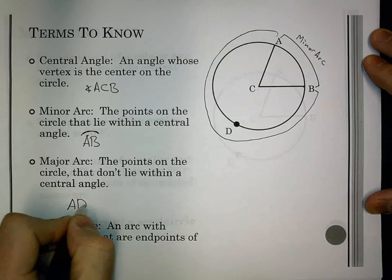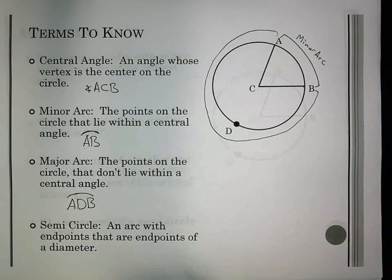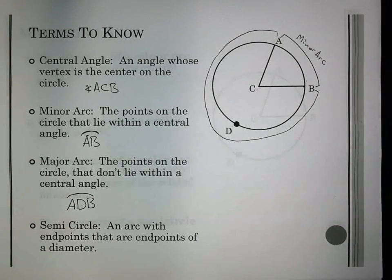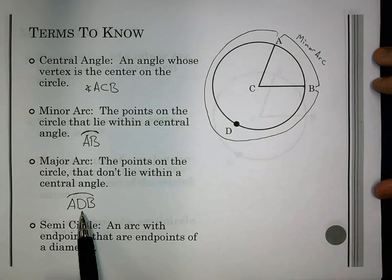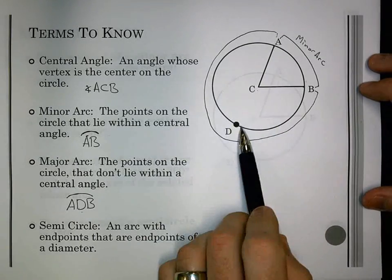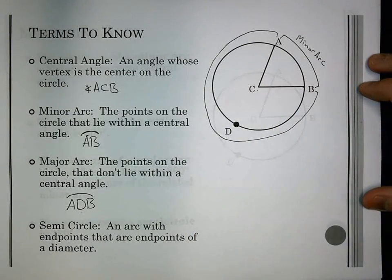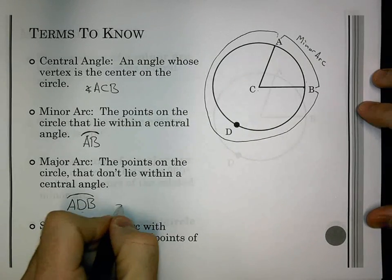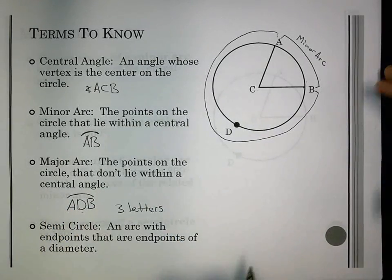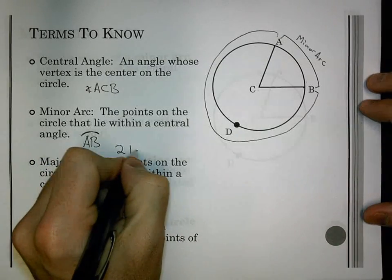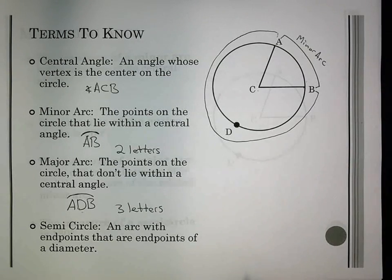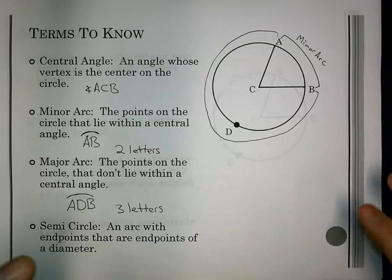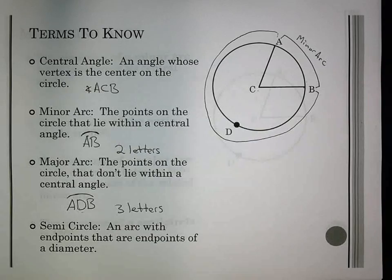So, we're going to call that ADB, and the arc above that one. We're not going to call it AB, because if we called it AB, then we really couldn't tell it apart from the minor arc. So, when you see a major arc, it will be three letters. And it gives you the directions. Start at A, go to D, finish at B. Now, I could have also called it BDA. It would have been the same thing. You just follow the path it goes. Major arcs will be three letters to identify. Minor arcs will be two letters.